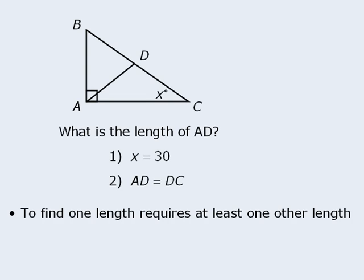Take this example. The target question asks us to determine the length of side AD. If a data sufficiency question asks us to determine a length or an angle, it is often the case that a statement will be sufficient if it locks the shape into having one particular angle or length — that is, if it forces the shape into having just one angle or length. We want to determine whether the statements force side AD into having just one length. Statement 1 tells us that x is 30, so this angle is 30 degrees. Does this information force side AD into having only one length?